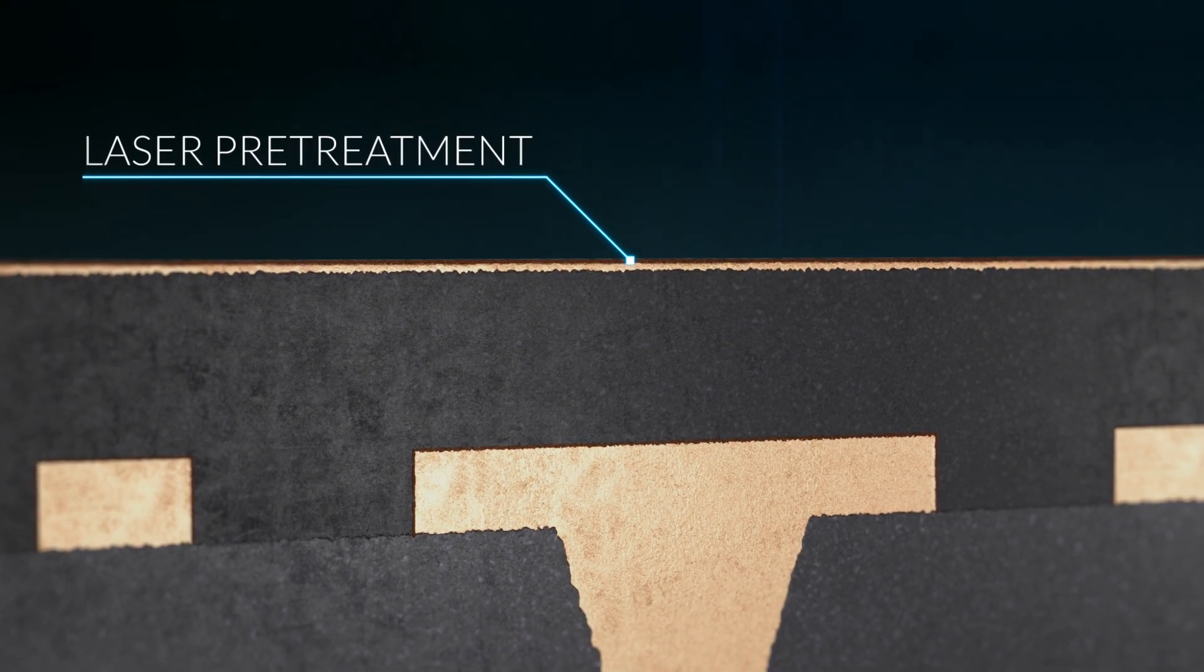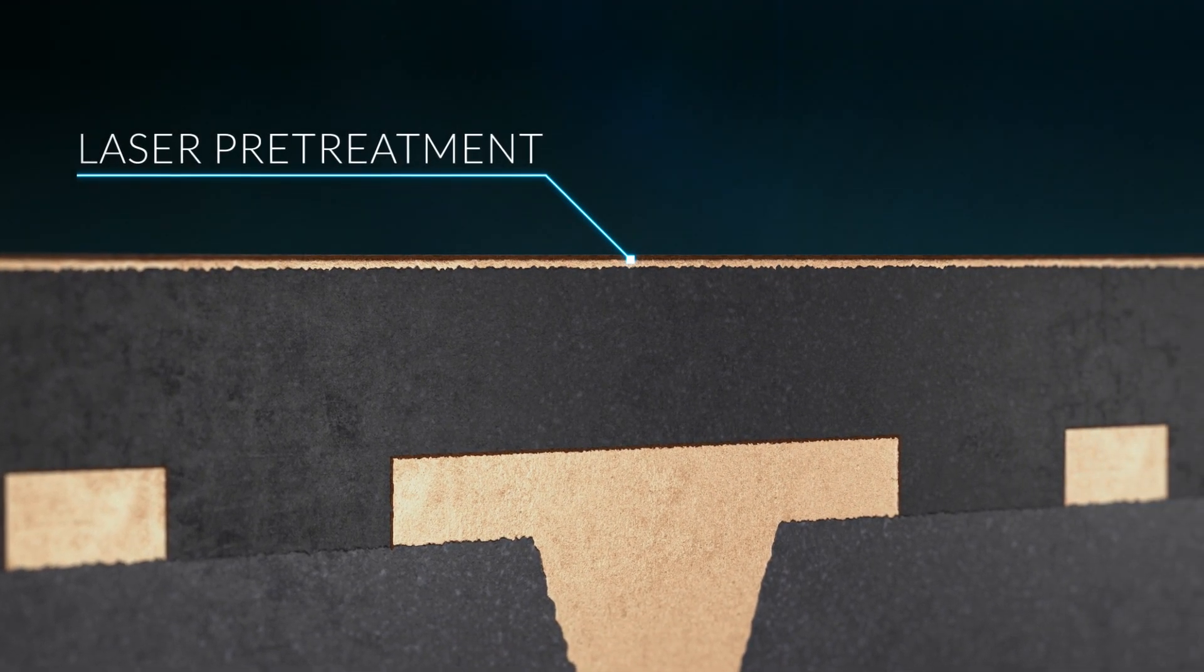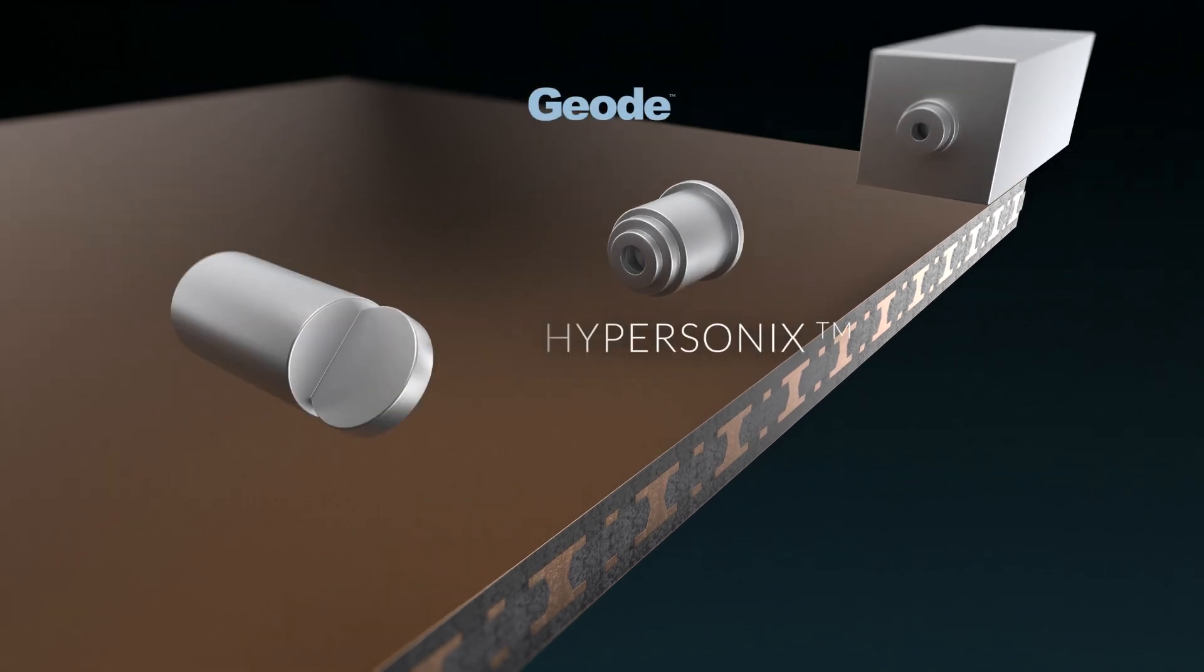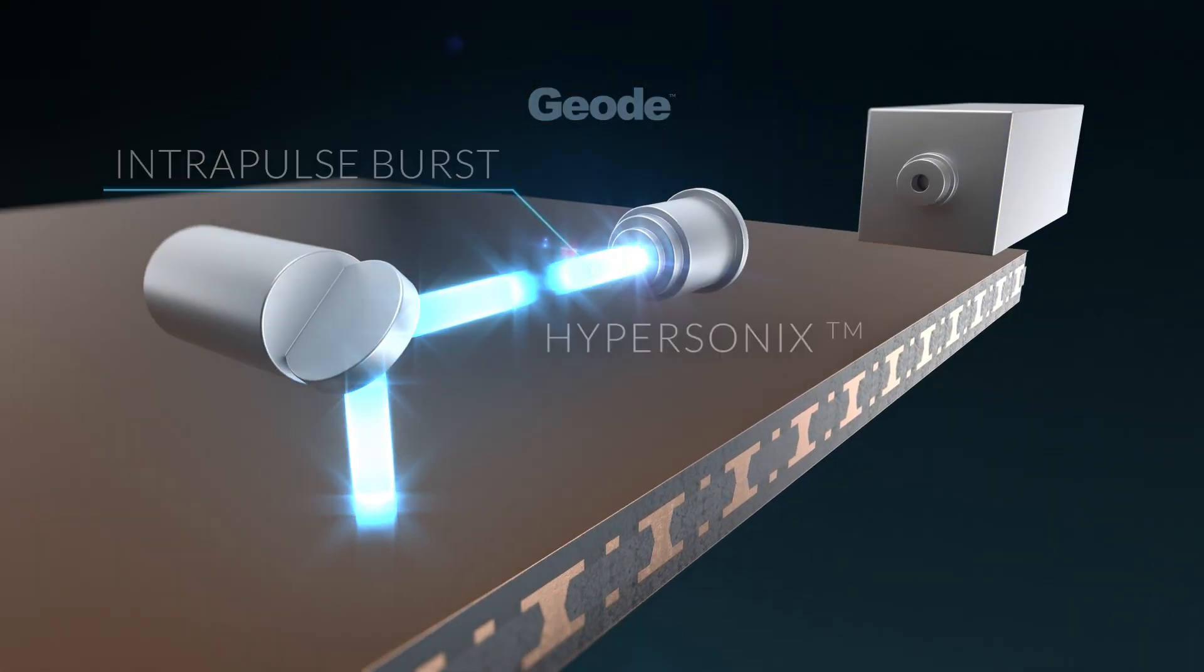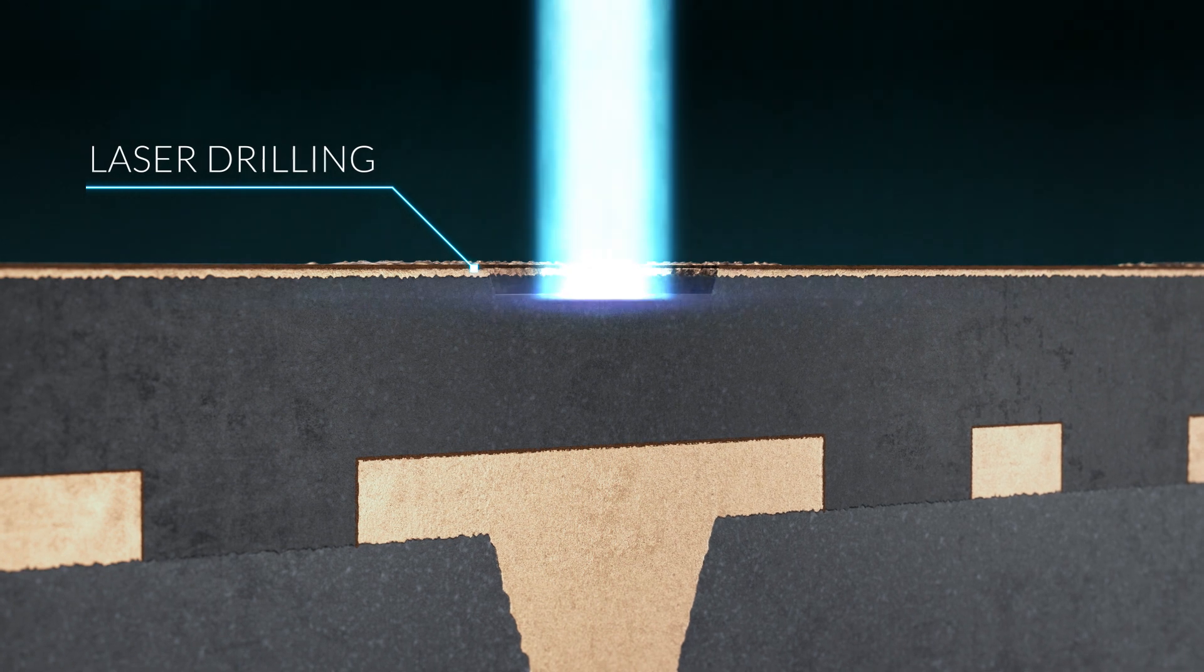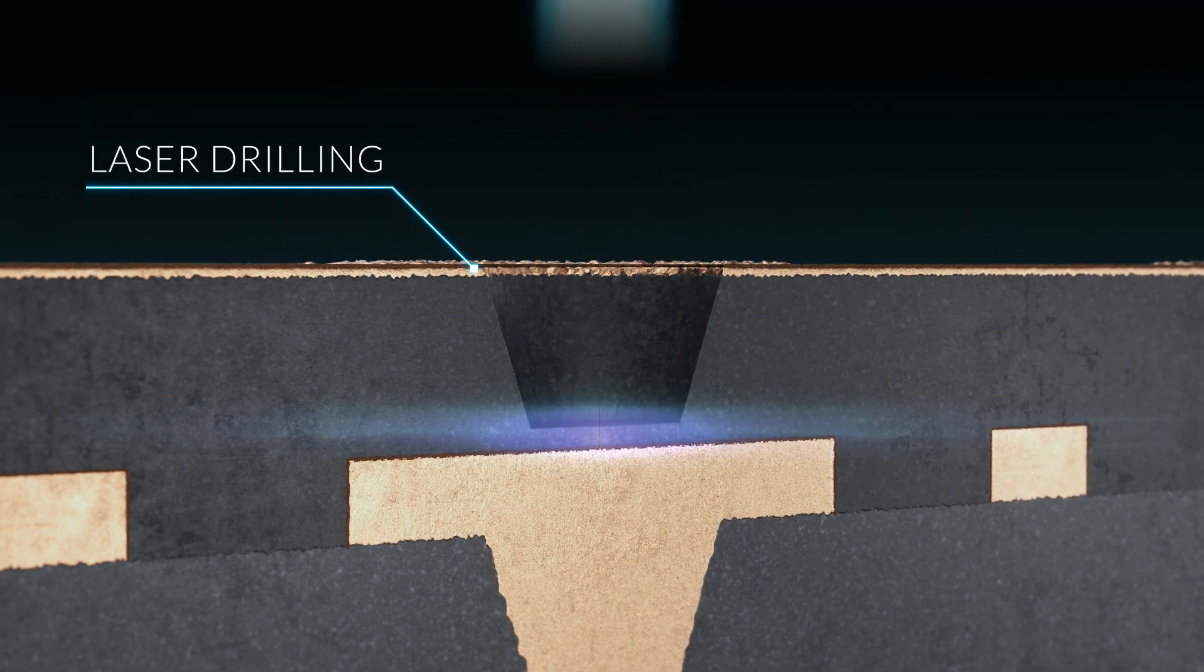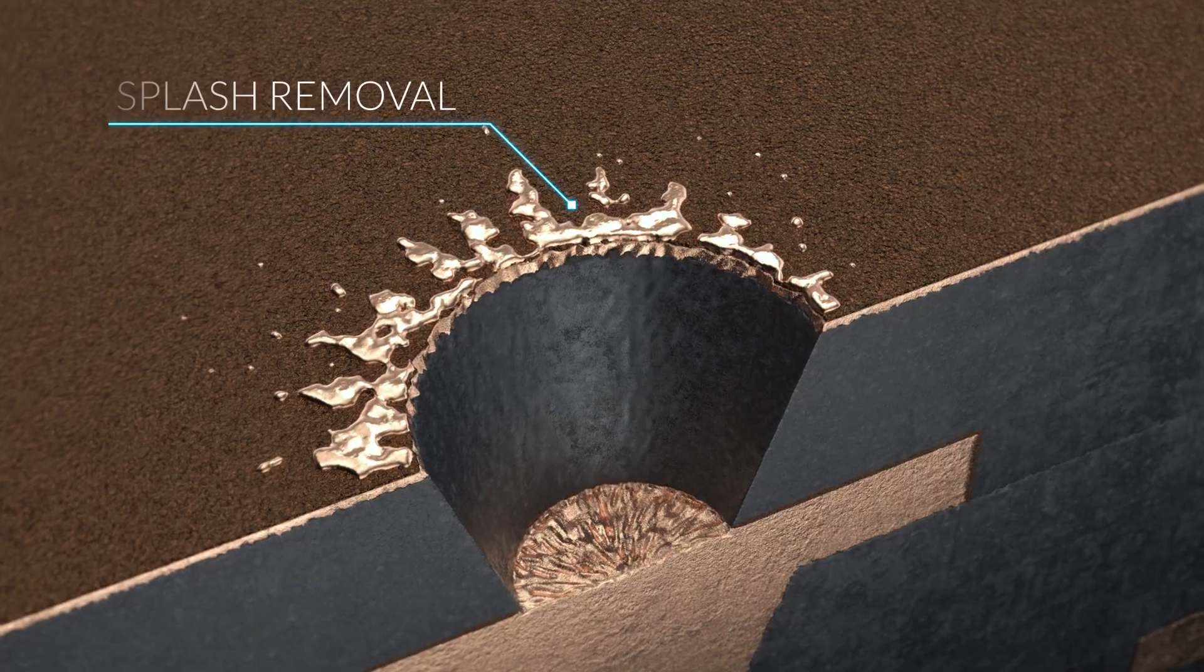The combination of MKS laser pretreatment know-how, Geode laser capabilities using hypersonics and intrapulse burst technology for best-in-class via formation using CO2 laser drilling techniques in combination with copper splash removal.